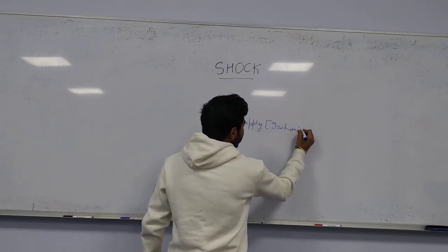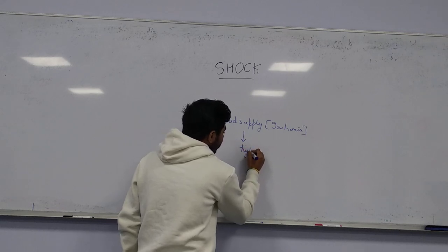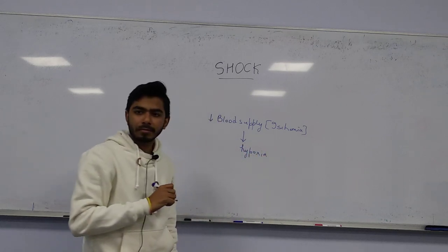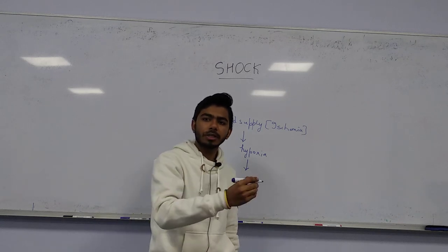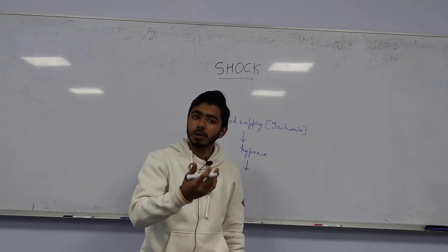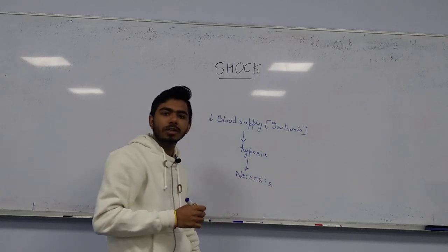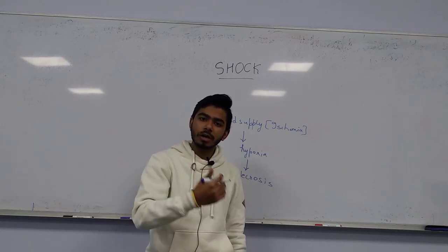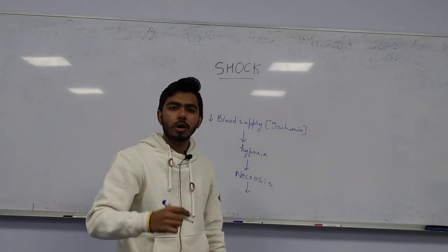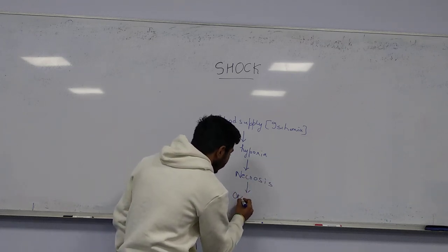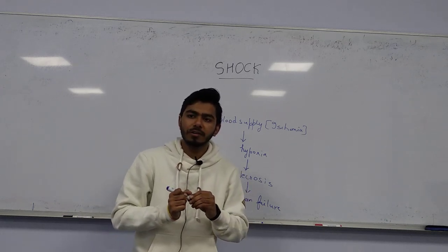Ischemia means less oxygen-carrying capacity of the RBCs, which leads to hypoxia. Hypoxia means cells are not getting a proper amount of oxygen, so they may die — leading to necrosis of the tissues. Since tissues make organs, necrosis can then lead to organ failure, which is very common in septic shock.